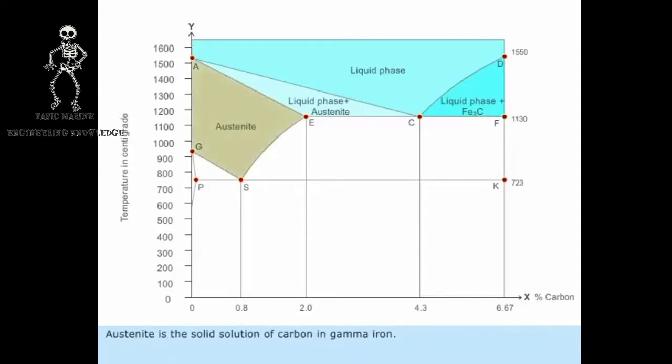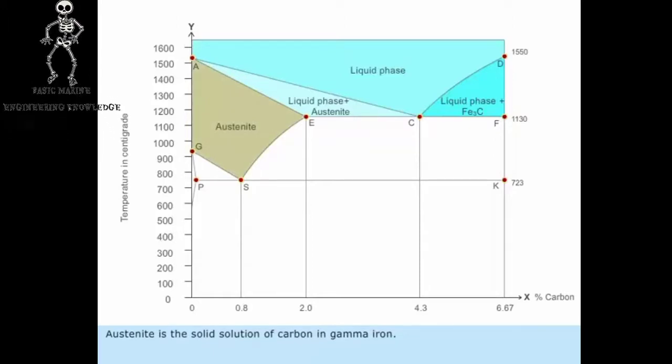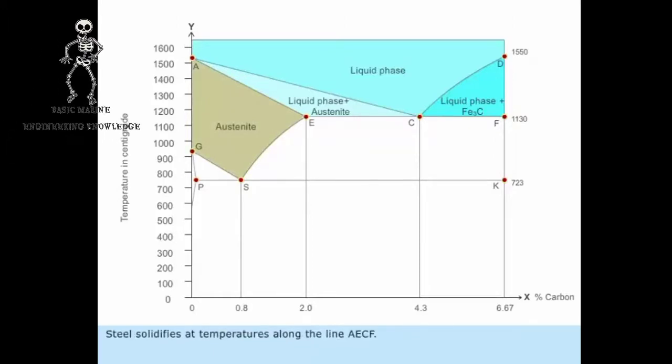Austenite is the solid solution of carbon in gamma iron. Steel solidifies at temperatures along the line AECF.